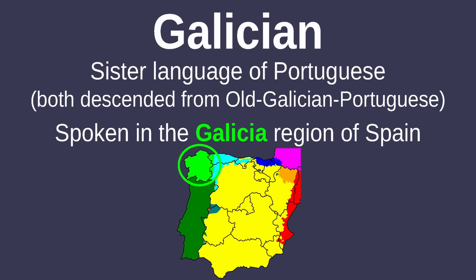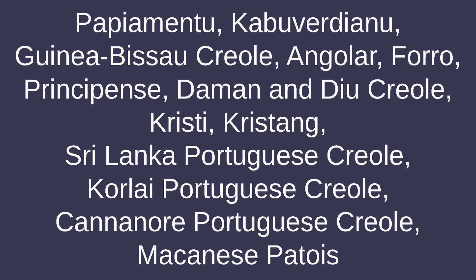Portuguese has the closely related sister language Galician, which is spoken in the Galicia region of Spain. There are also a lot of Portuguese-based Creole languages, namely Papiamentu (which also had Spanish influence), Cabo Verdean, Guinea-Bissau Creole, Angolar, Forro, Principense, Daman and Diu Creole, Kristi, Kristang, Sri Lanka Portuguese Creole, Korlai Portuguese Creole, Cannanore Portuguese Creole, Macanese Patois, and that's not even including all the ones that have gone extinct.